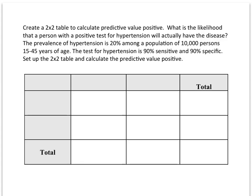The prevalence of hypertension is given as 20% among a population of 10,000 persons 15 to 45 years of age. The test for hypertension, hypothetical test, is 90% sensitive and 90% specific. So in setting up the 2x2 table we start with our column headers which is hypertension positive and hypertension negative, no disease, and our rows of test positive and test negative.